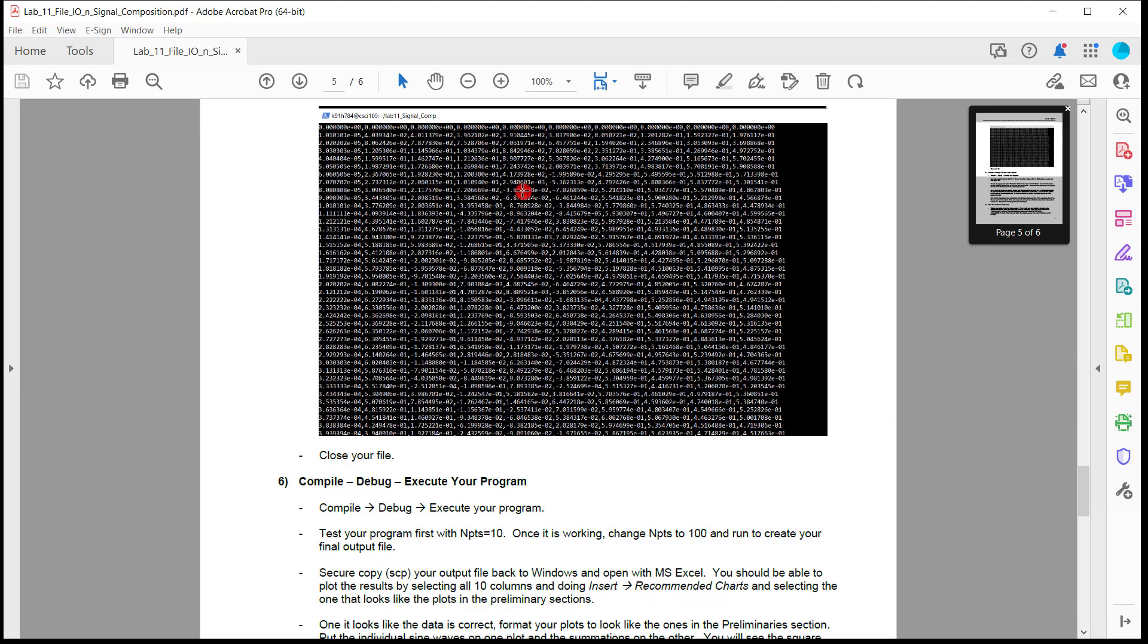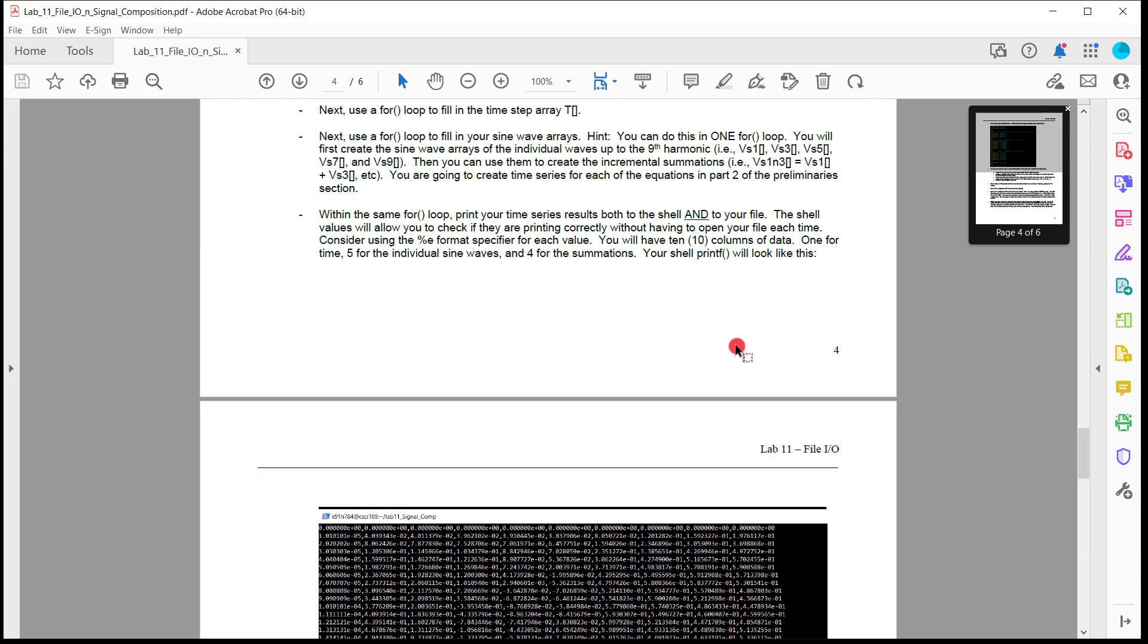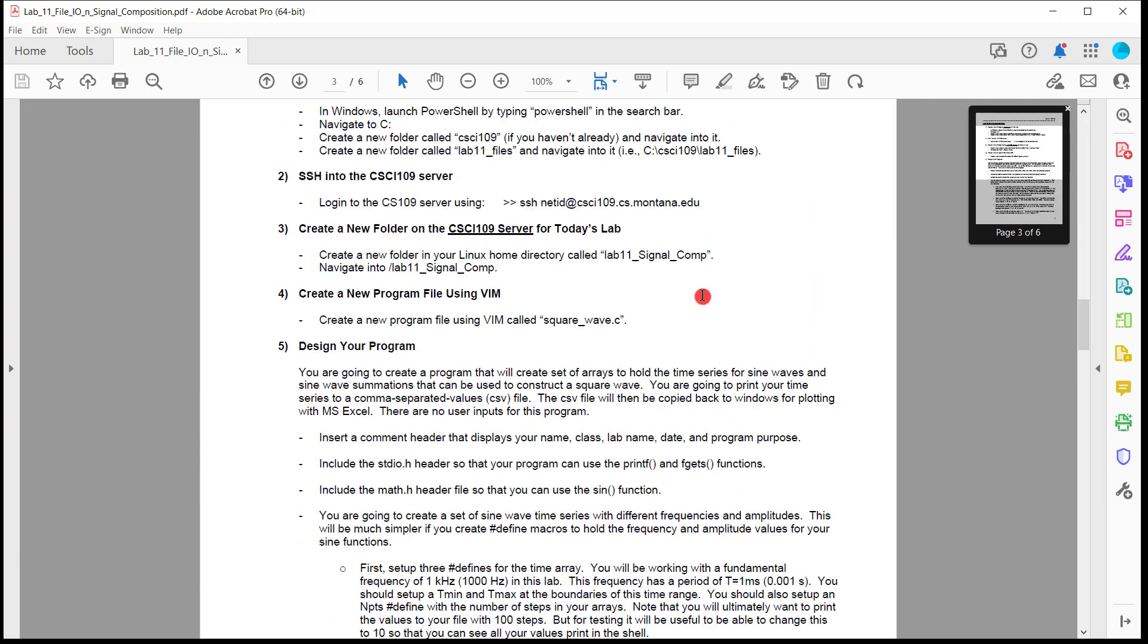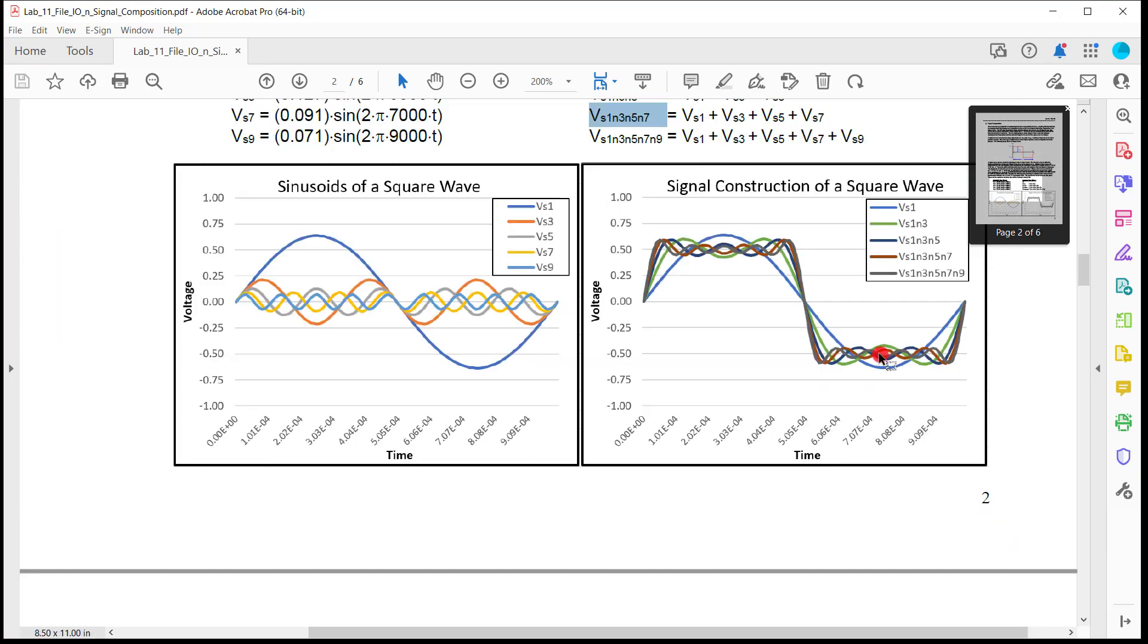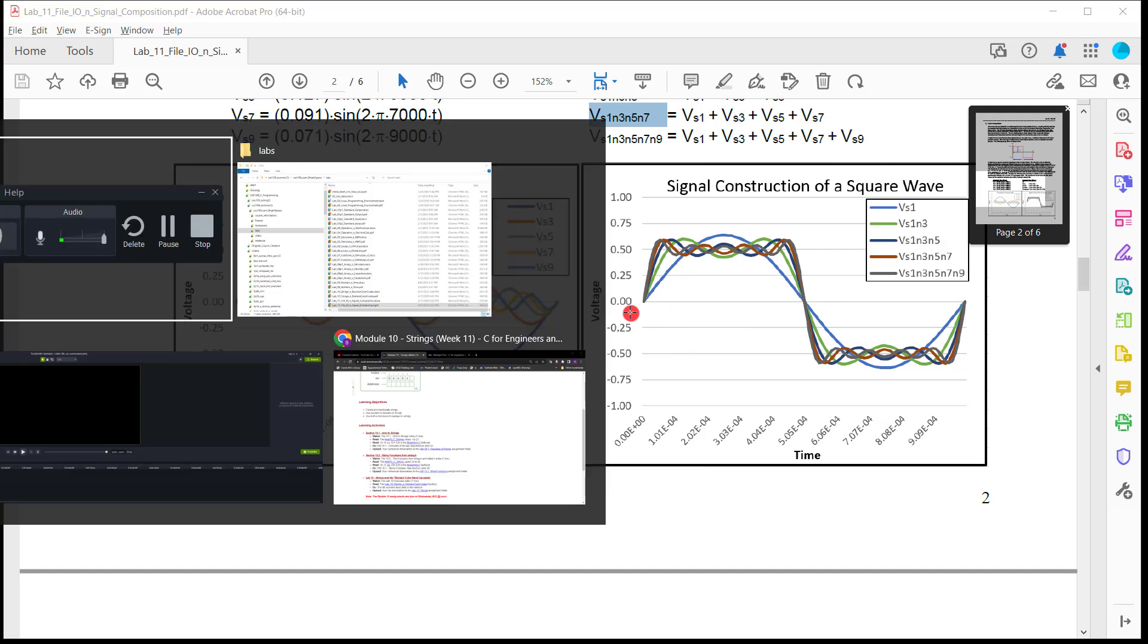And when you get done, what it's going to look like is this. It's going to be this massive awesomeness pile of all these different values where you'll have time over here. And then you'll have all these different sine waves. And when you pull them into Excel, you're going to dump that to a CSV. When you dump it into Excel and plot it, it will look like this. So these are the plots that you should have. This is what you're going to turn in.